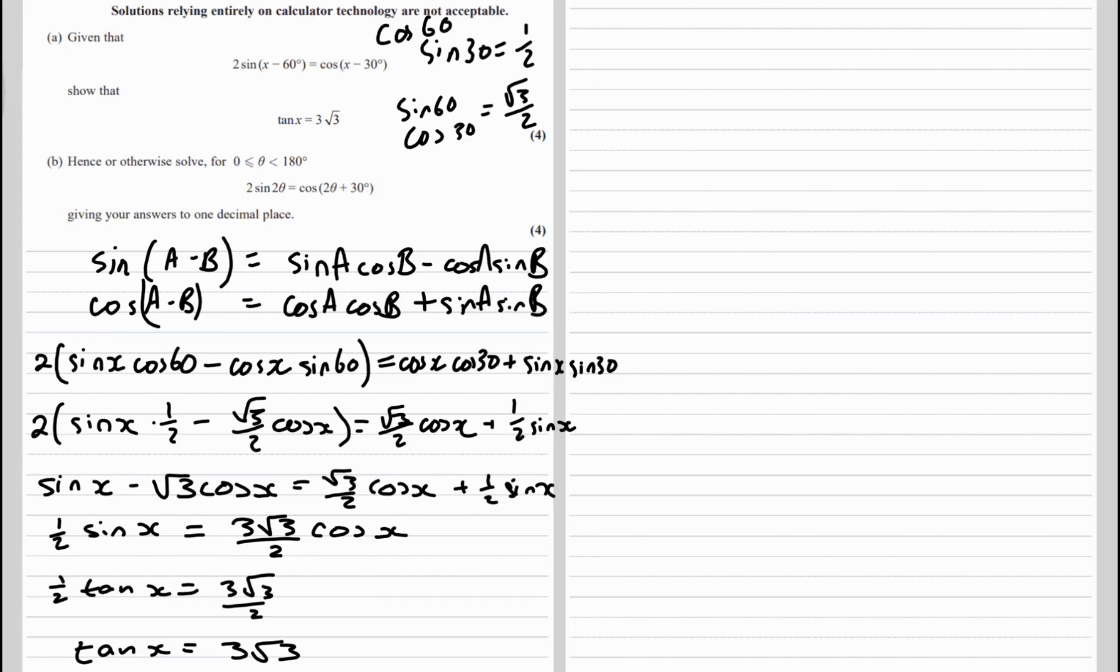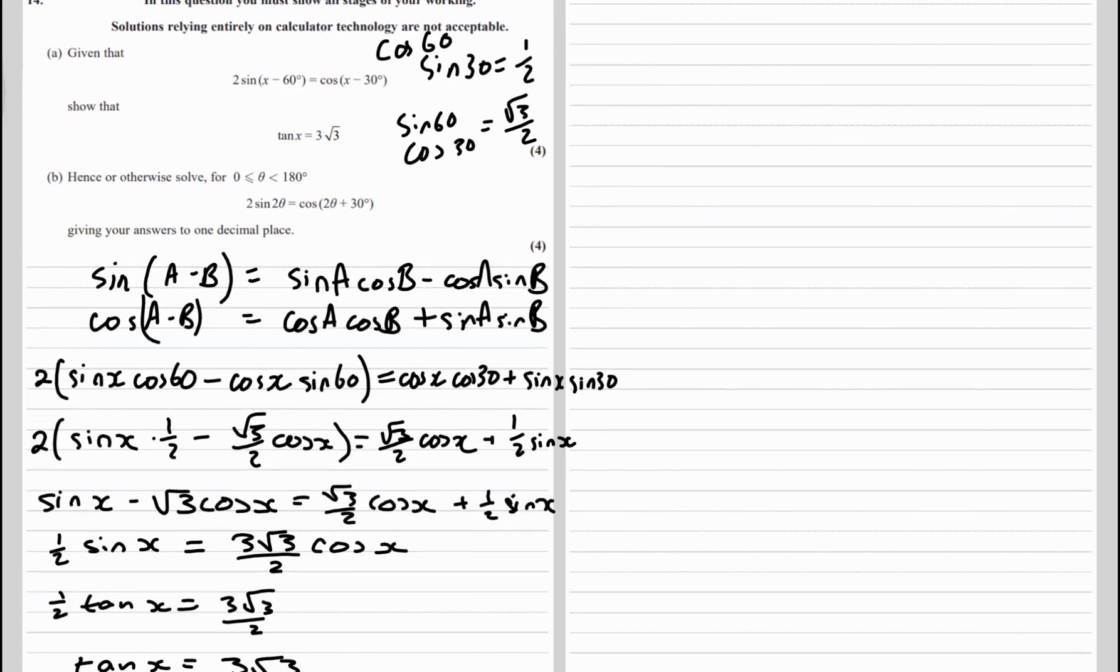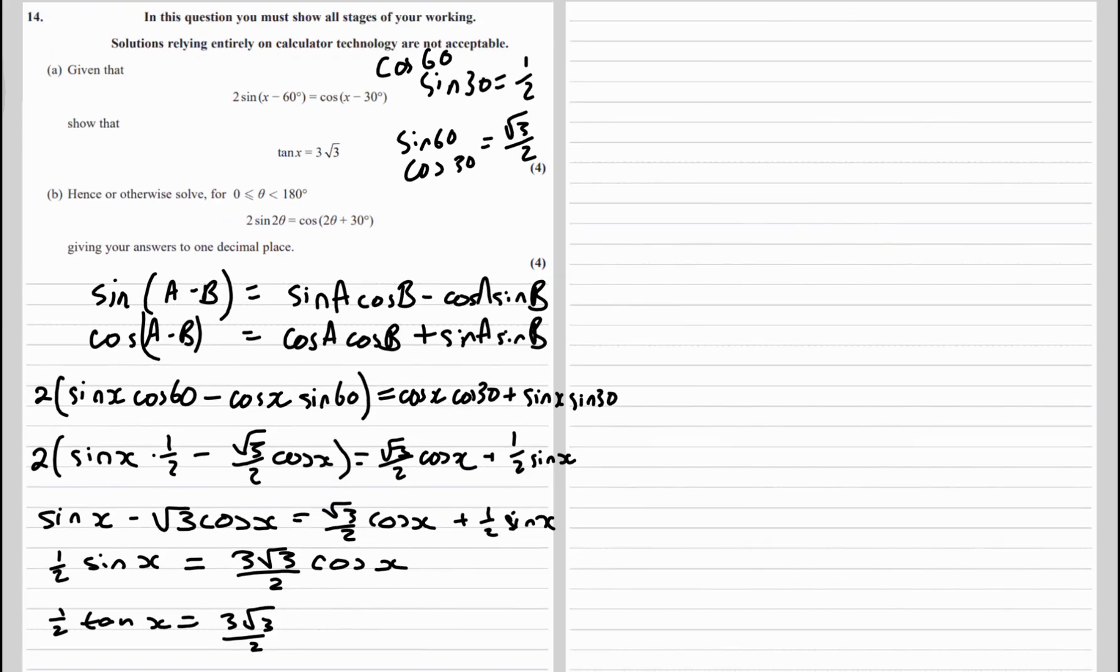So it says hence or otherwise solve for 0 to 180 degrees: 2 sine 2 theta minus 60 equals cos 2 theta plus 30 degrees, giving your answers to one decimal place.